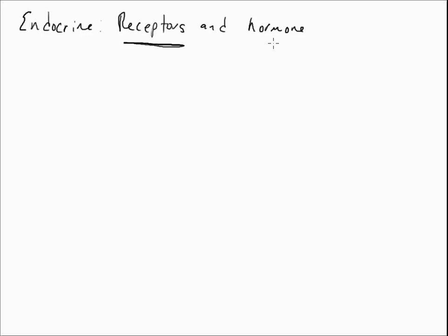Hormones and receptors are interrelated in the sense that the receptors are very specific for a very particular hormone. What I mean by that is hormone A doesn't act on any receptor — it's only going to act on a very specific receptor for that hormone.